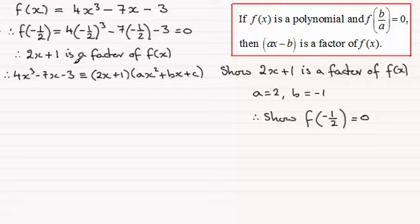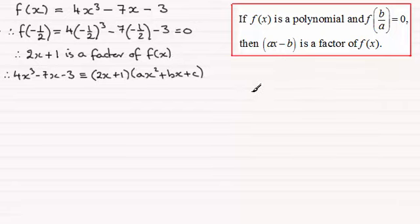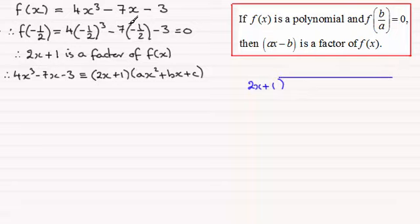Now I said there was another way to show that 2x plus 1 was a factor of f(x), and that is by algebraic long division. If I remove this, I would expect to see that 2x plus 1 divides exactly into the polynomial 4x cubed minus 7x minus 3.